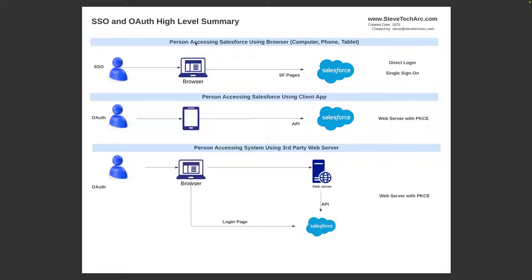We have single sign-on flows, which are meant to be used by the browser, talking to Salesforce by a human being using either direct login or single sign-on. We have OAuth flows, one of which not using the browser — could be a mobile app hitting the API with the user. That would be the web server flow with PKCE. Then we have a human being working in a browser hitting a third-party web server, where the third-party web server, acting on behalf of a user, can direct to the login page for the user.